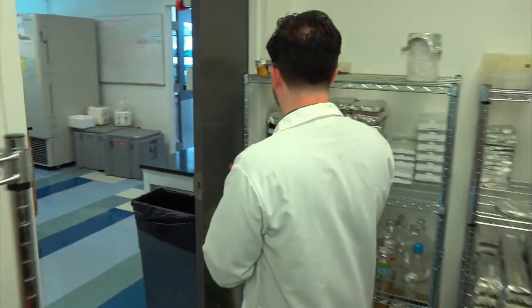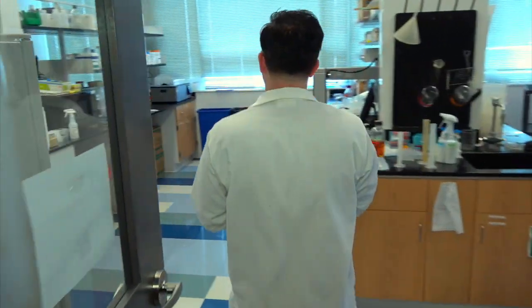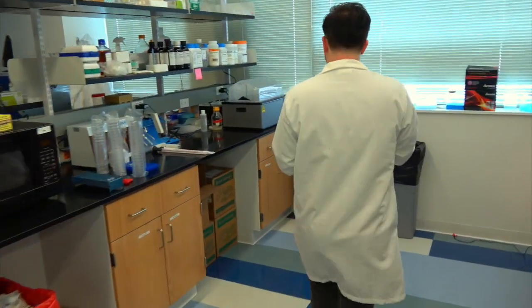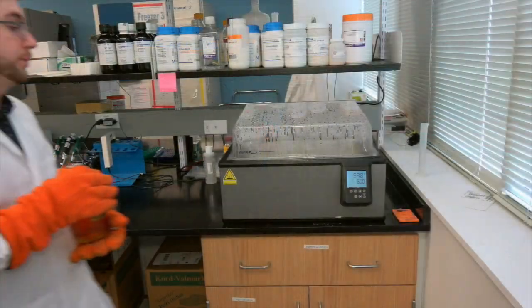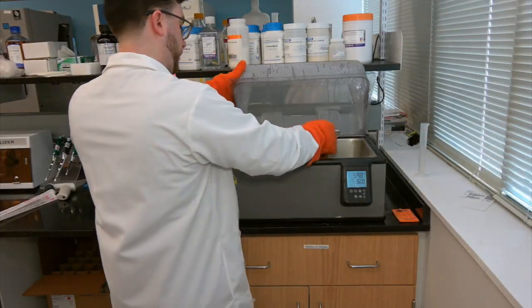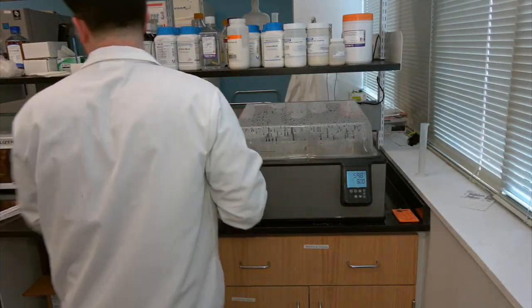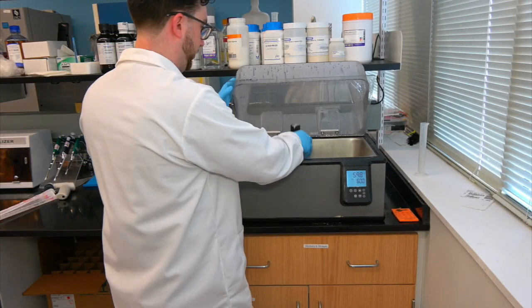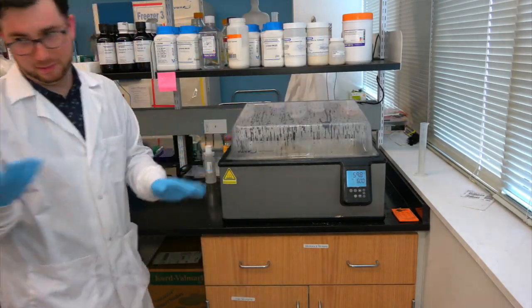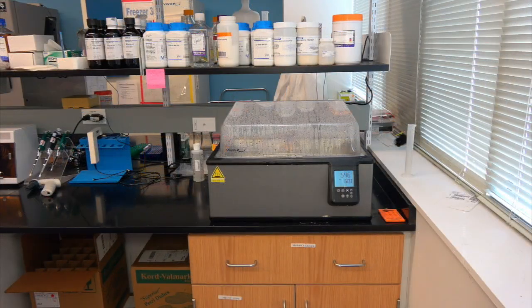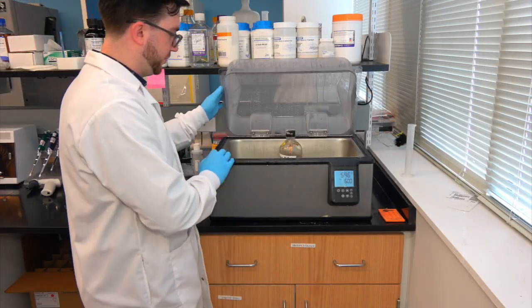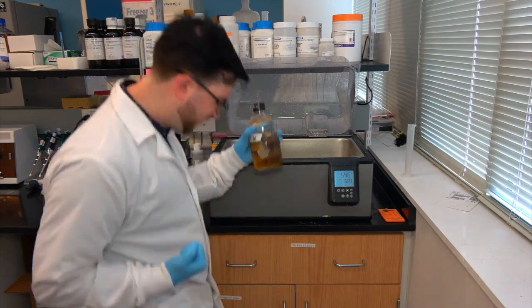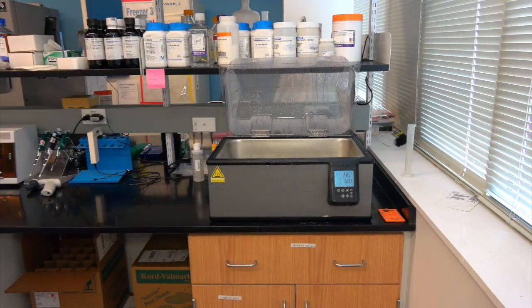Next, we place the bottle with the molten LB agar mix into the 60 degrees Celsius water bath, submerging about 75% of the bottle. Be careful not to let any of the water bath water touch the lip or the top of the bottle, as this water is not likely to be sterile. After at least 5 minutes, we remove our molten gel mix from the water bath. As a good rule of thumb, if you can hold the bottle with lab gloves, it's likely cool enough to add antibiotic. You can use a laser thermometer for a more accurate temperature measurement.